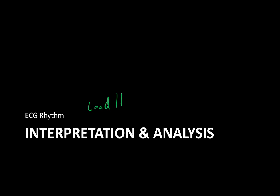Moving on to ECG rhythm interpretation and analysis. We've talked about the ANP, gone over the electrical properties of the myocytes, talked about how to lay out the leads and how the leads measure the flow of electricity depending on what angle you're looking from. Focusing on lead two as the primary one for this lecture, it's now time to apply a standardized structured method to analyzing these rhythms to figure out what you're dealing with.